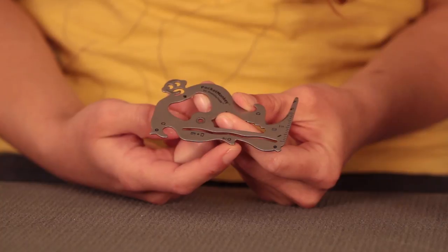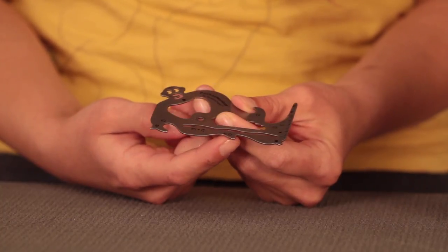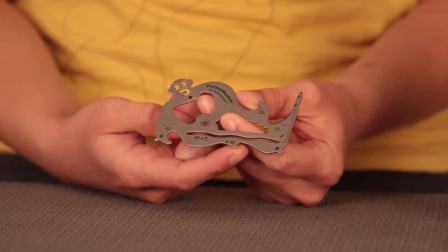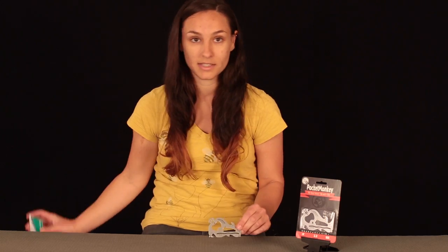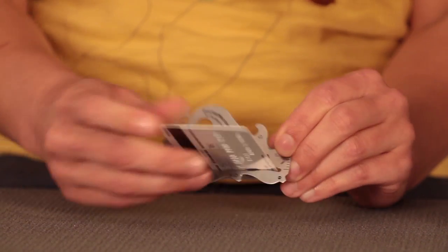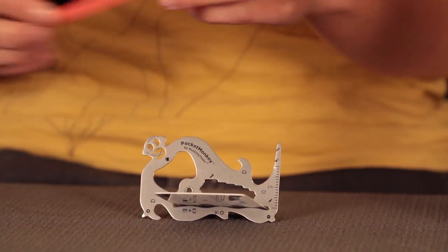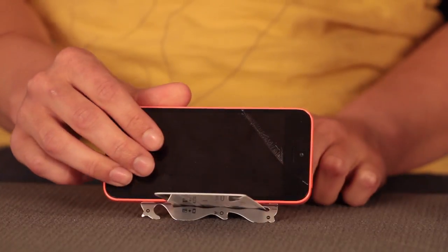And right down here, this little nub, if you don't have fingernails, this will help you get your orange peeled. Last but not least, if you slide your credit card through this slot here, it becomes a stand for your smartphone.